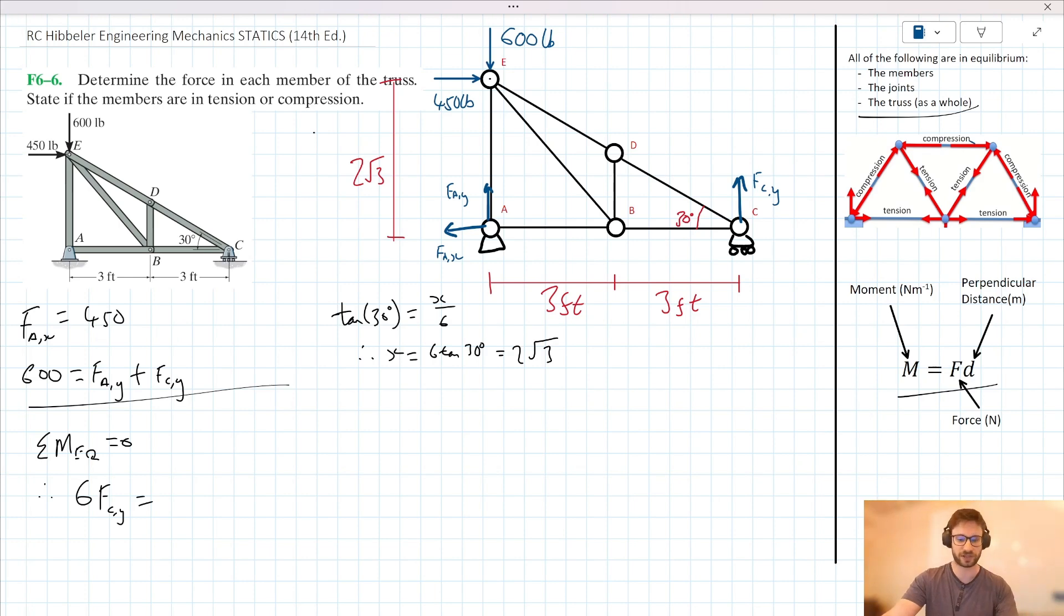Okay, back to where we were earlier. So we were taking moments earlier, we have an anticlockwise moment of 6 F_CY, and we have a clockwise moment then of 2 root 3 F_AX. Note, we calculated F_AX earlier, it's 450.